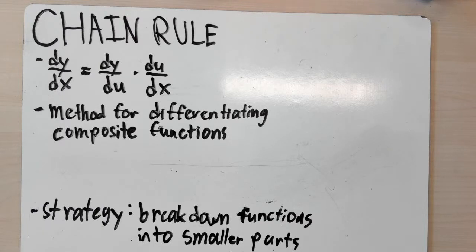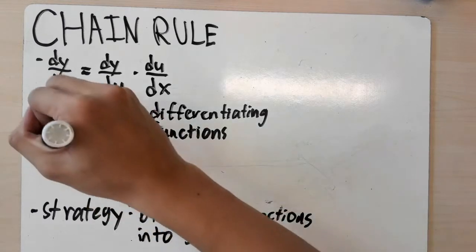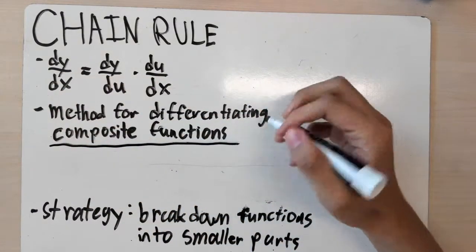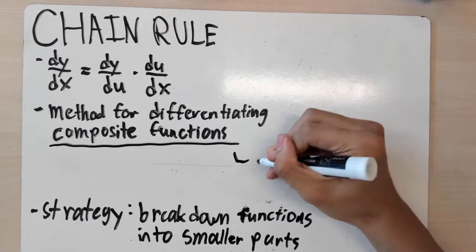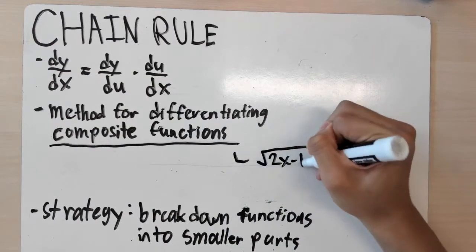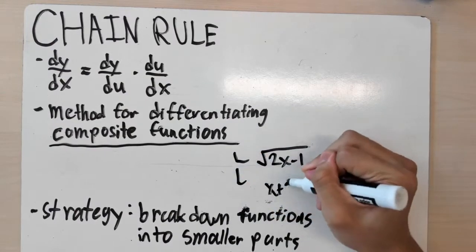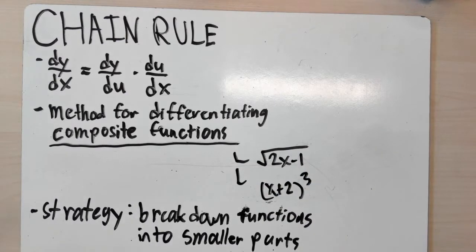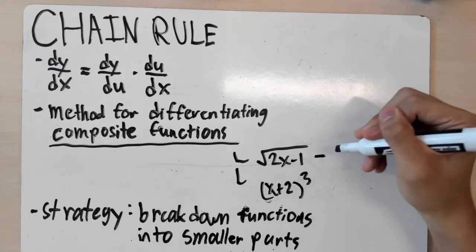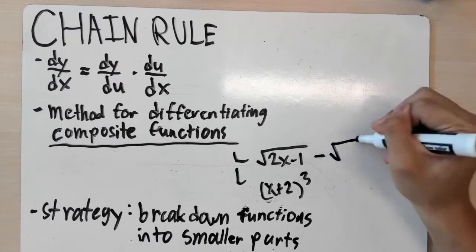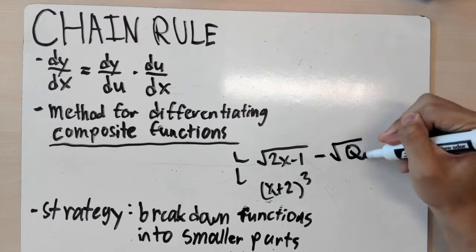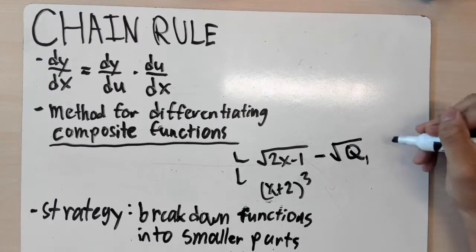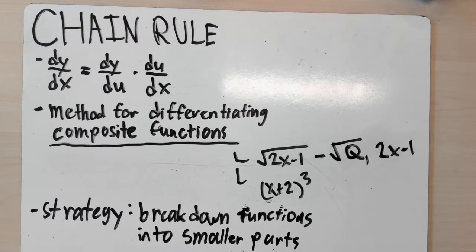Chain rule is essentially the method for differentiating composite functions, such as the square root of 2x minus 1, or (x plus 2) raised to the third. A composite function is essentially a composition of two functions — for example, this one is a composition of a square root of a quantity and the function 2x minus 1.